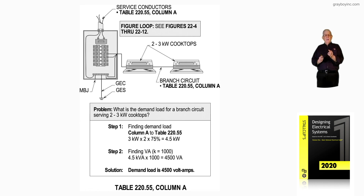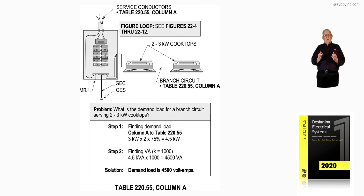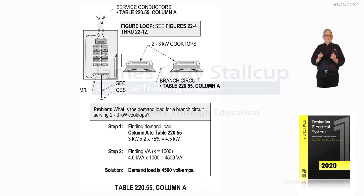So we're at 4,500VA. The demand load for the branch circuit, feeder, or service is 4,500VA. That is the answer and solution you see in the boxed-in information when you have two or whatever number of units on the branch circuit, as shown in this illustration.